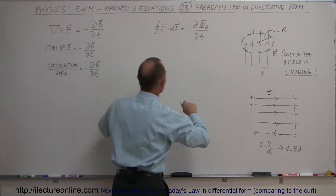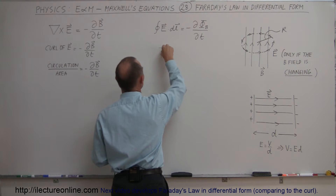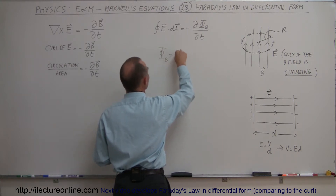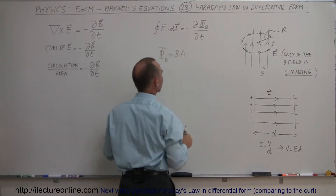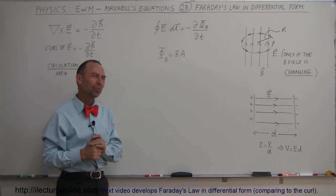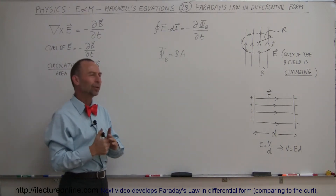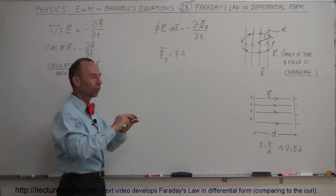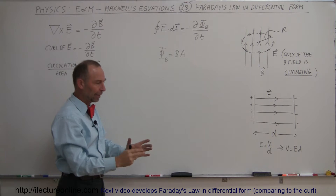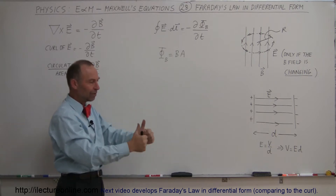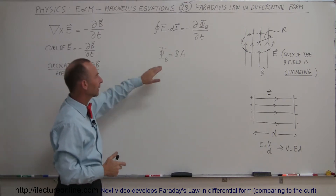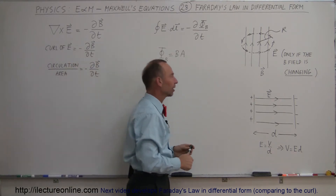We have to remember what magnetic flux is. By definition, the magnetic flux is equal to the strength of the B field times the area through which it passes. If we take an area and we know how much B field flux goes through that area, then we can calculate what we call the magnetic flux.